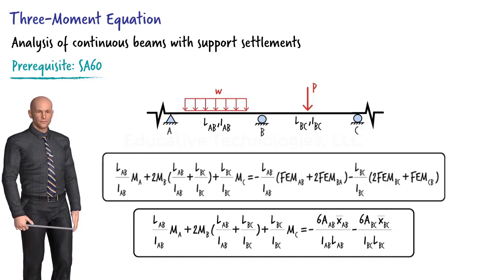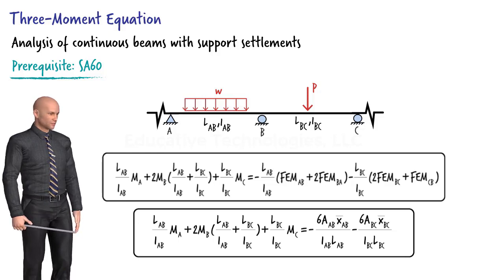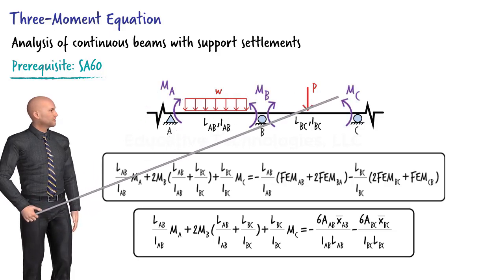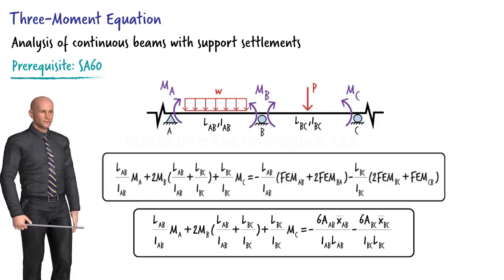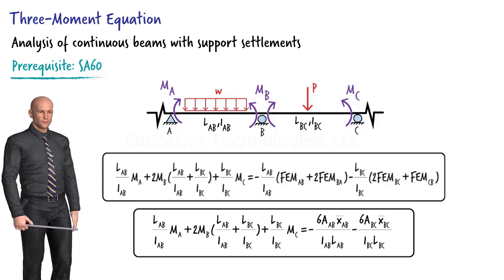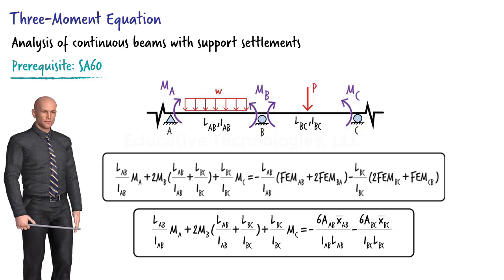As was demonstrated in the previous lecture, we apply one of these equations to a given beam to determine the internal bending moments at the supports. Once these moments are determined, we can use the static equilibrium equations to calculate the remaining unknown member forces and support reactions. In this lecture, we expand this formulation to include support settlements.